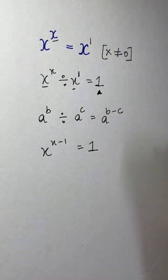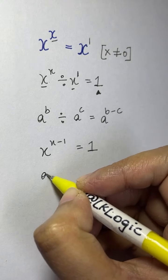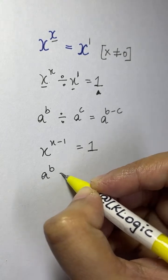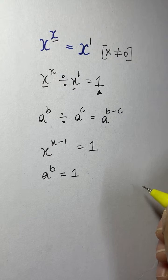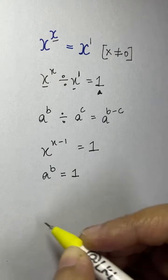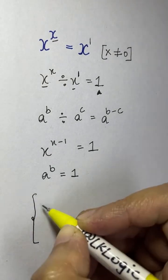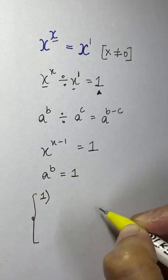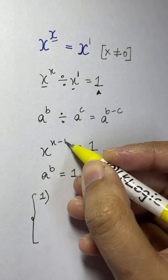So we have 1 here. Now this is in the form of a to the power of b equals to 1. Can a and b be 0? If a is 0 and b is 0, there's no meaning — 0 to the power of 0 has no meaning. So it has three conditions. We can write the three conditions here. Now here we are referring to a as x and b as x minus 1.